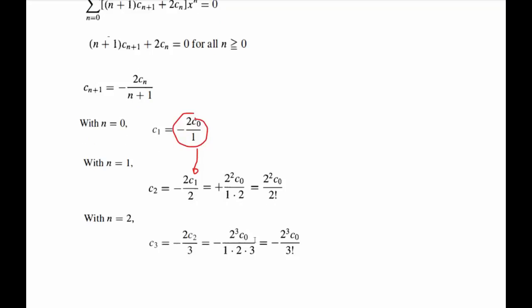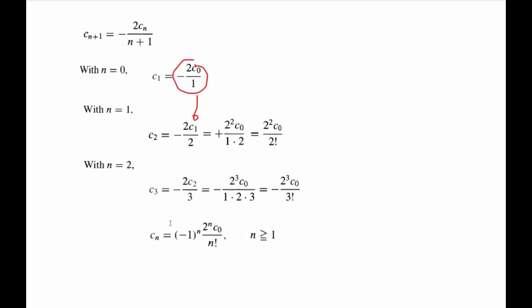Because you see, this of course can be written as 2² c₀ over 2 factorial. So with n equals 2, now c₃ should obviously be 2 cubed. So we've got an alternating sign going on here—negative, positive, negative—powers of 2 with regard to the index here, and the factorial with regard same as the index here. So therefore we end up with this nth term: (-1)^n 2^n c₀ over n! for n ≥ 1.